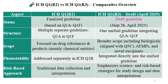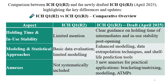The Q1R3 draft guideline includes a broader scope, covering biologicals aligned with Q5C, ATMPs, and novel excipients. Photostability, which was addressed separately in ICH Q1B, is now integrated directly into the unified guideline. The earlier risk-based approach involved traditional data collection and interpretation, whereas Q1R3 emphasizes science and risk-based strategies for study design and data interpretation. Clearer guidance on holding time of intermediates and in-use stability post-opening of containers is now included.